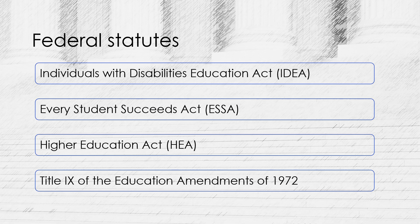The Every Student Succeeds Act, enacted in 2015, sets out requirements for educational accountability and improvement in public schools. It requires states to administer annual standardized tests in reading and math, but also provides more flexibility to states in terms of how they use these test results and how they measure school performance. ESSA also includes provisions related to early childhood education, teacher preparation, and the support of English language learners and disadvantaged students.